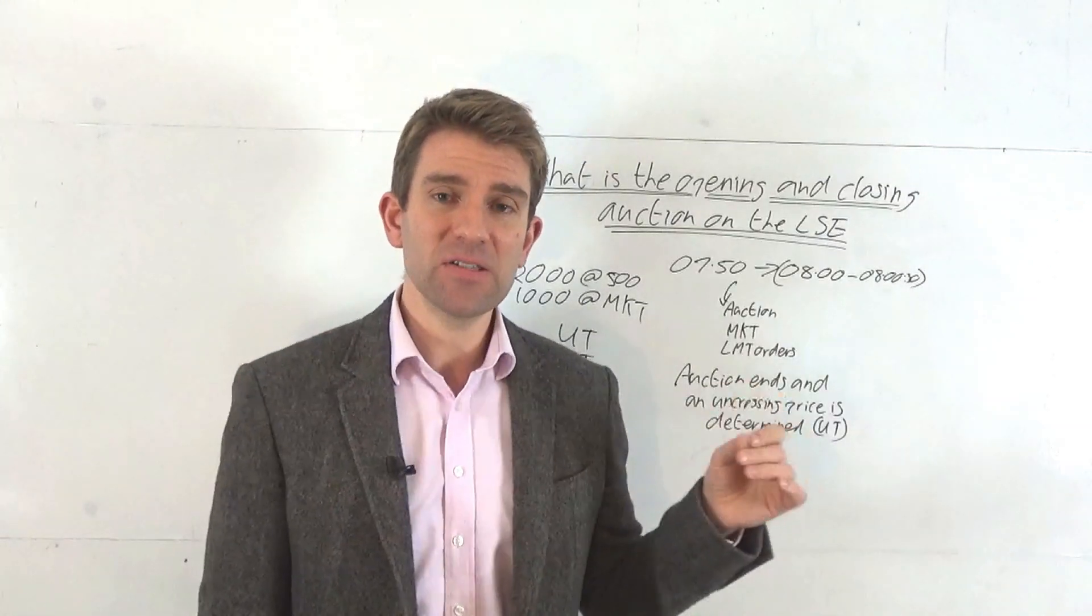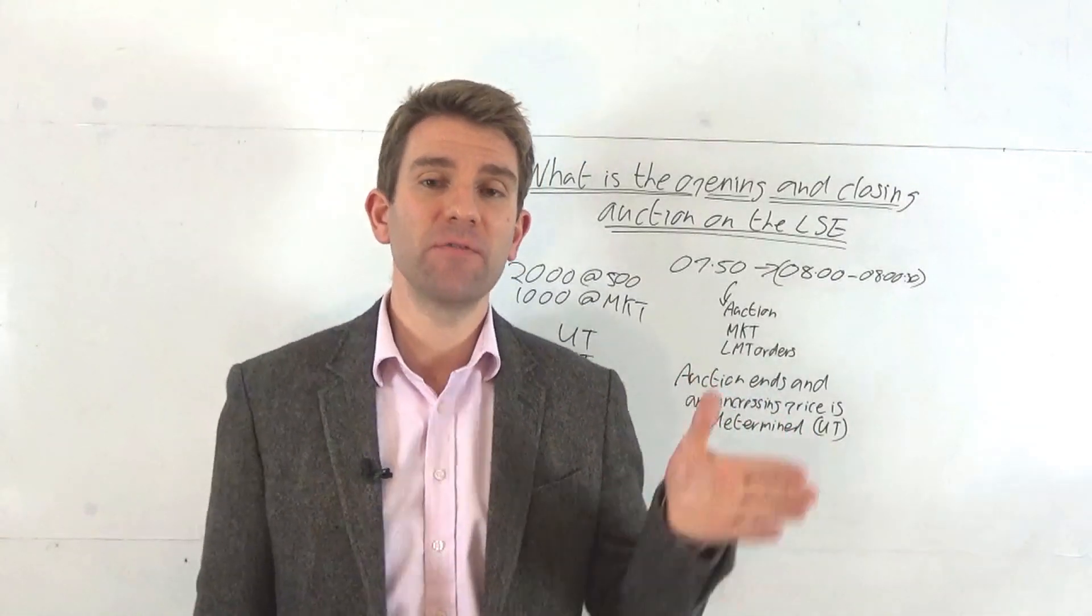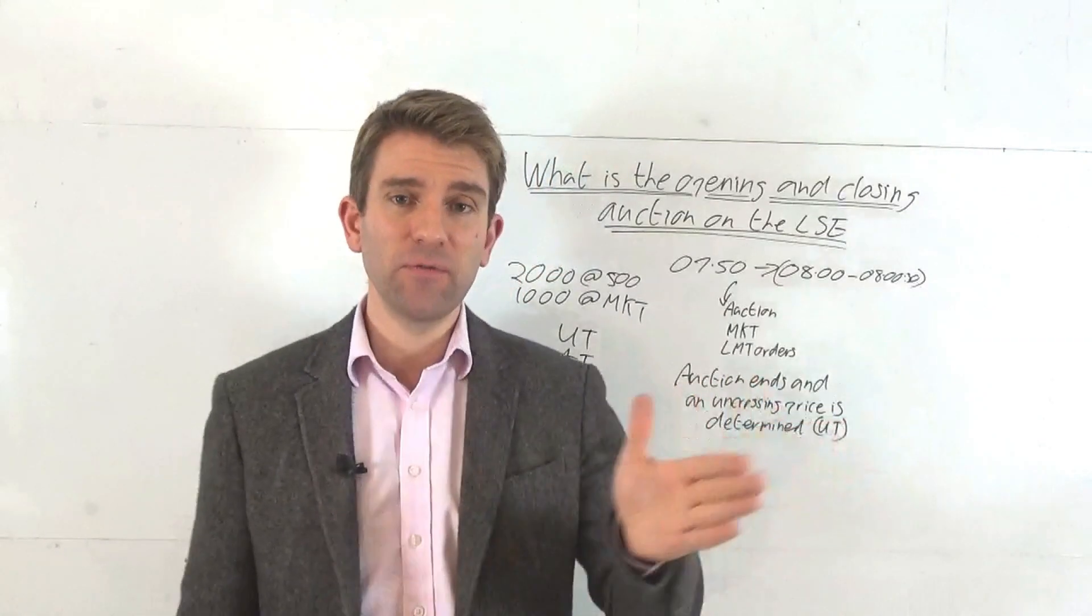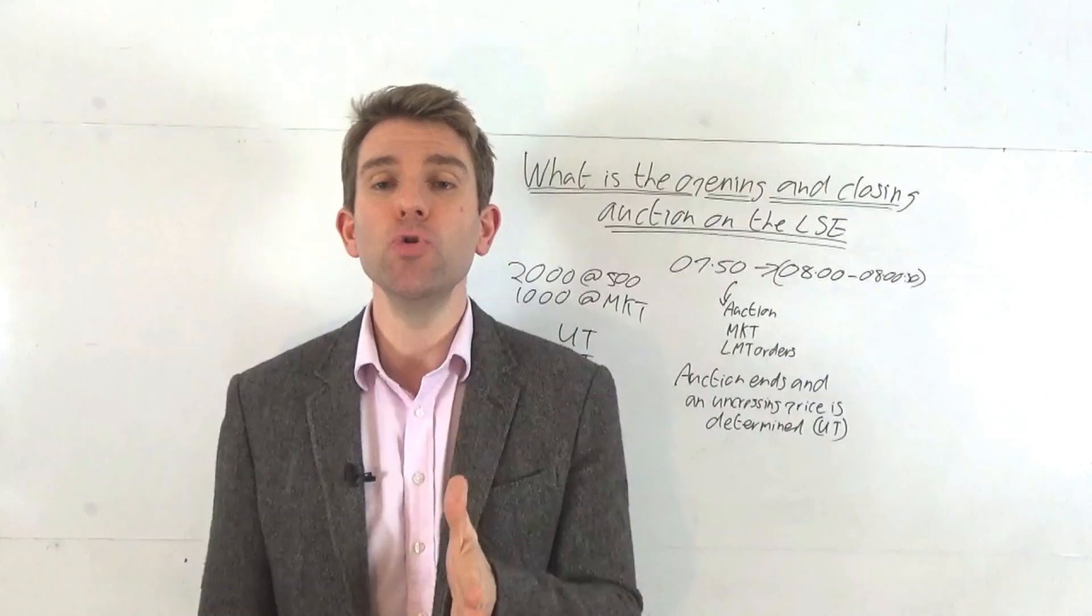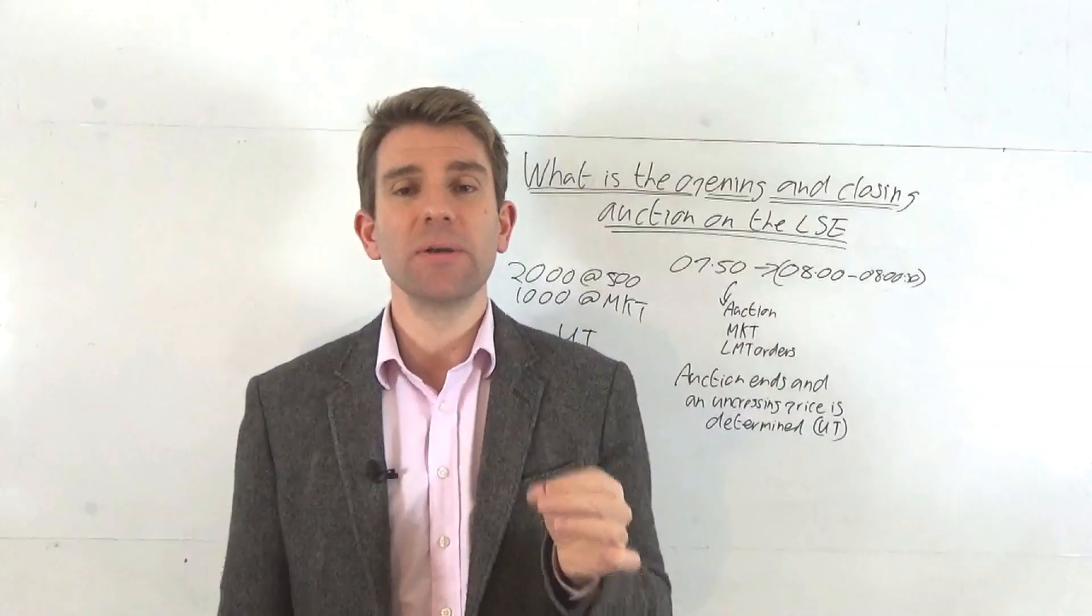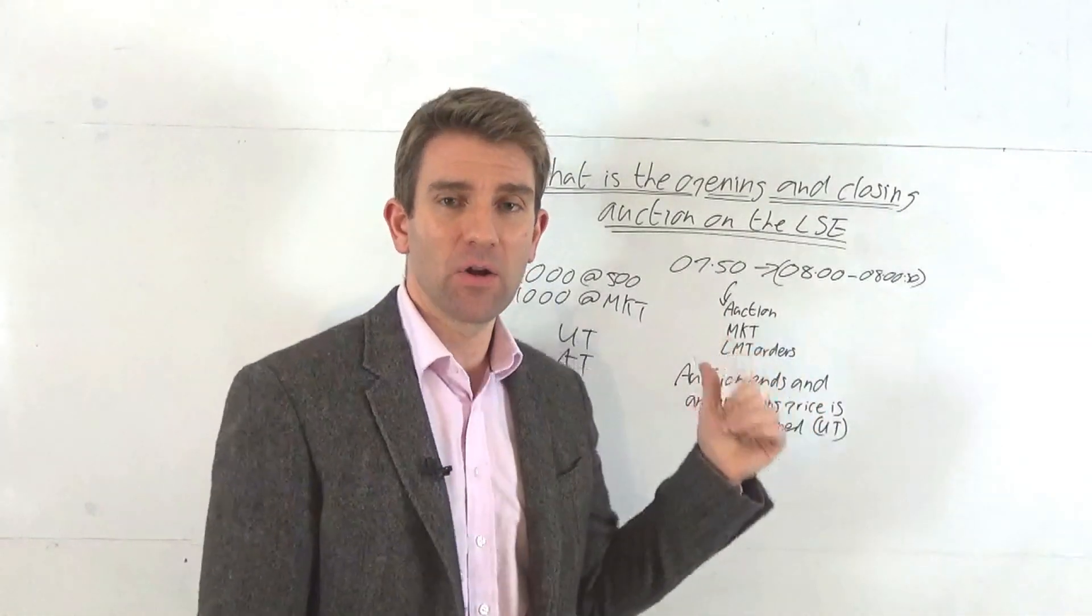If that doesn't happen, there's a VWAP period from 4:20 to 4:30 UK time. The volume weighted average price along that time period is used as the closing price if we don't get an uncrossing.